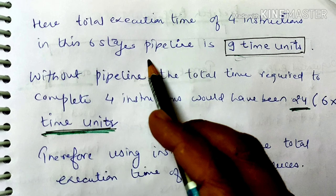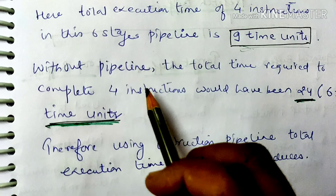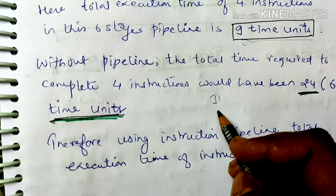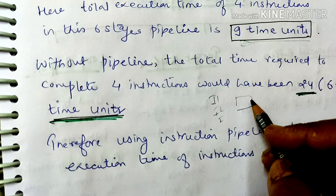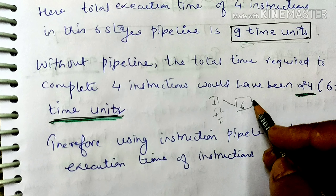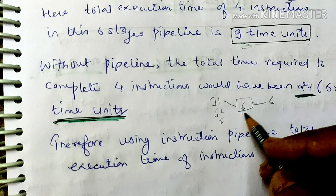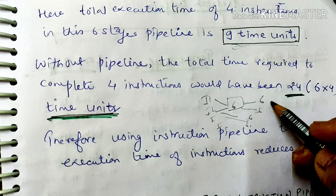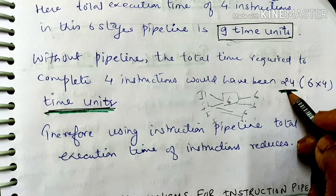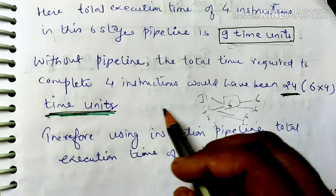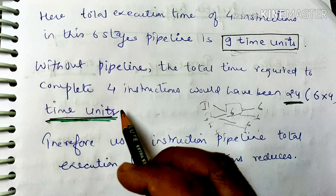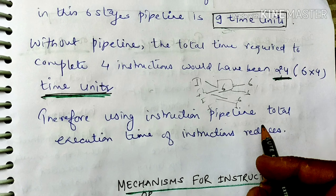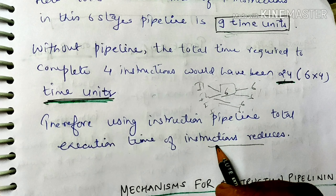So 4 instructions in a 6-stage pipeline execute in 9 clock periods. If there is no pipelining, each instruction takes 6 clock periods, so 4 instructions would take 4 × 6 = 24 clock periods. Therefore, using instruction pipelining, the total execution time of instructions is significantly reduced.